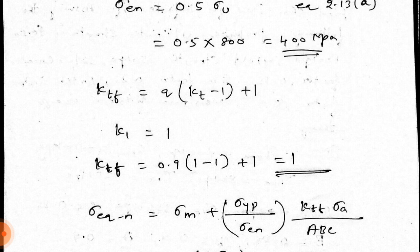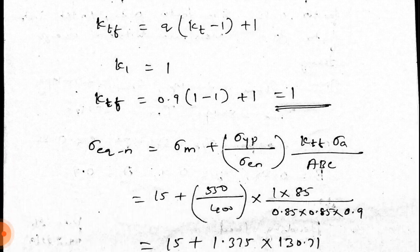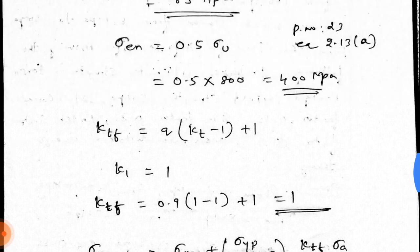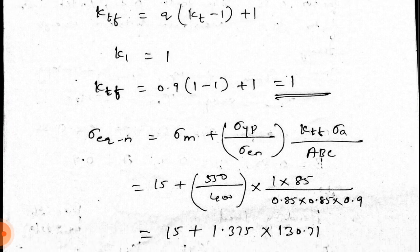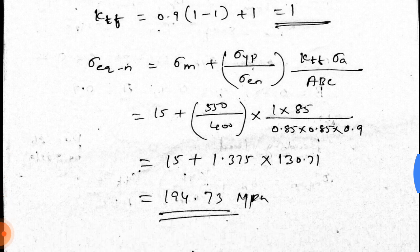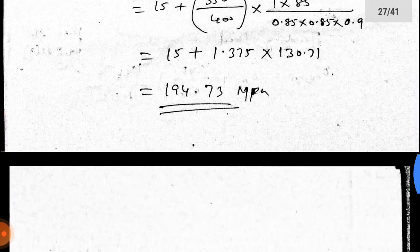These are the plus side. We are going to know 1 minus 1 equals 0, that means ktf is equal to 1. Substitute the value. 15 plus sigma yp 550 divided by sigma en 400, ktf 1, sigma a 85 divided by abc. Simplifying, sigma en bending value is 194.73 MPa.